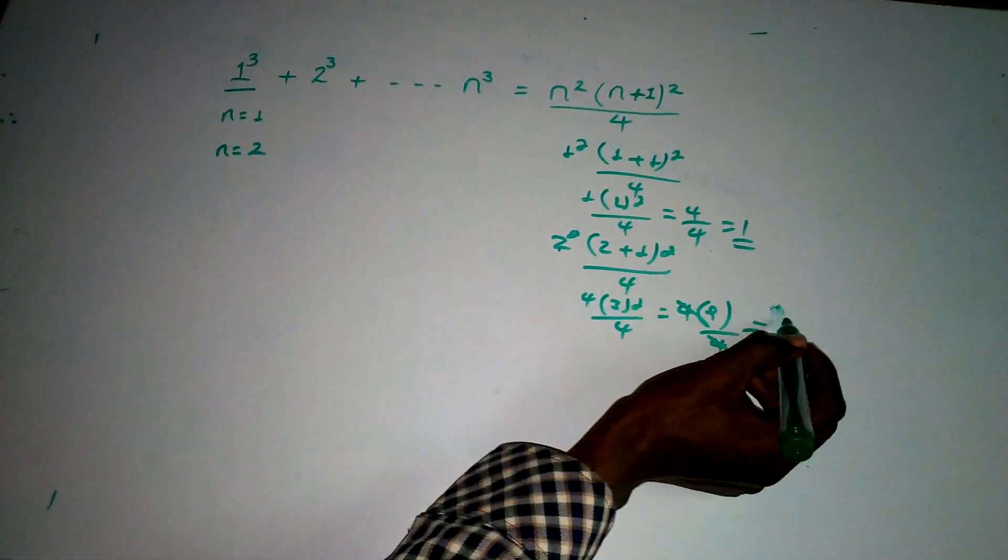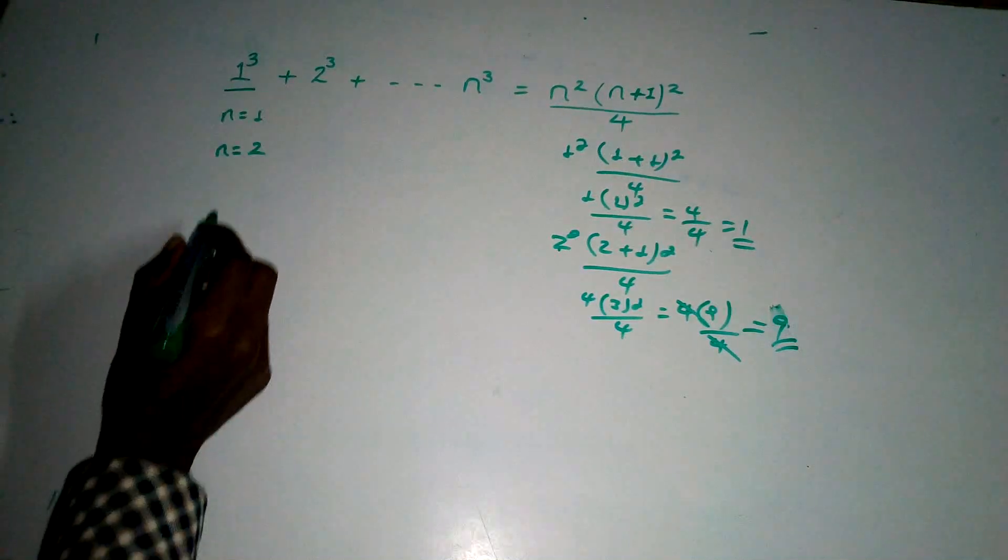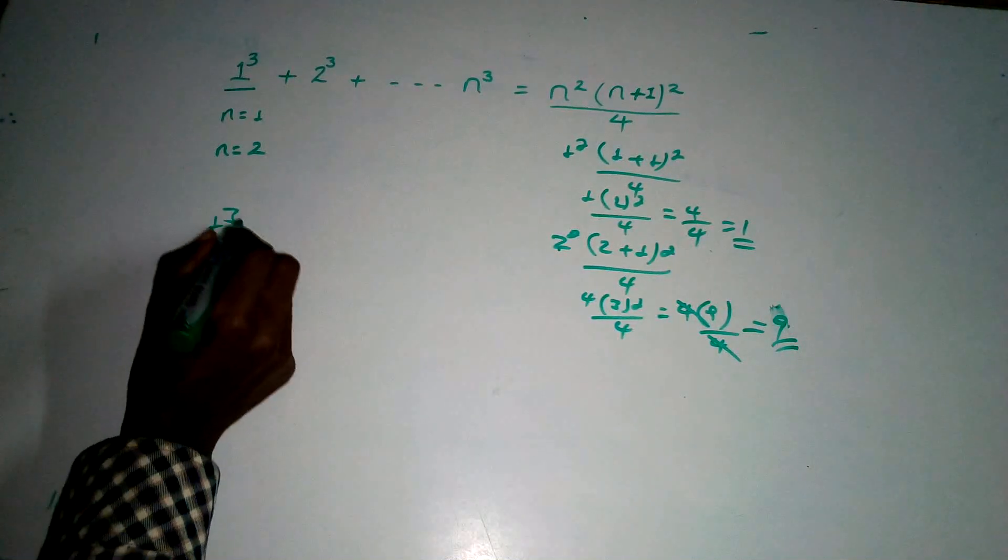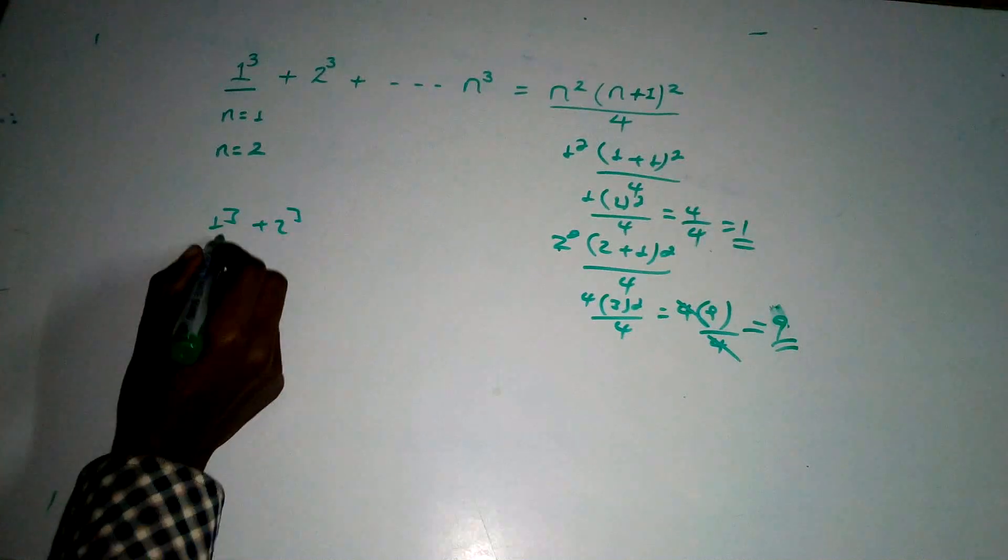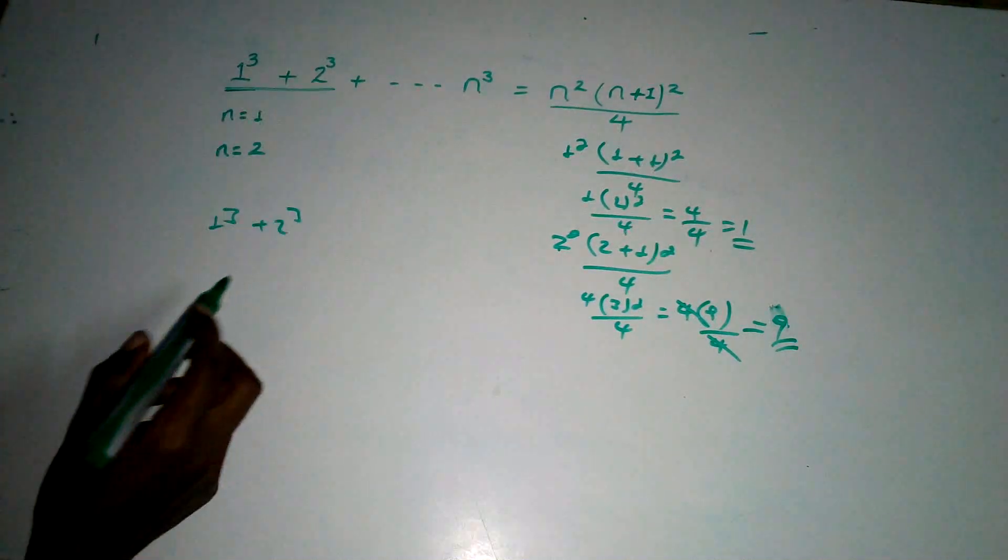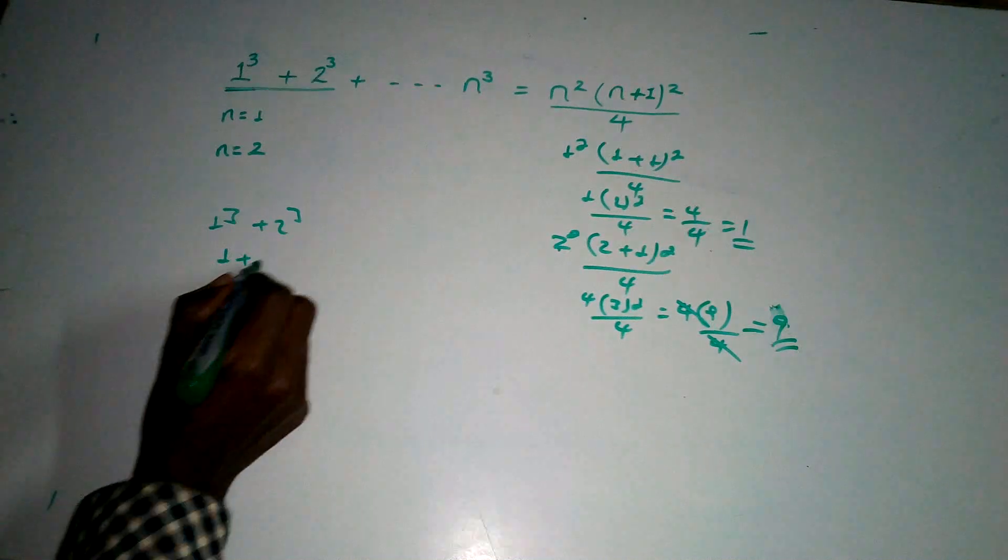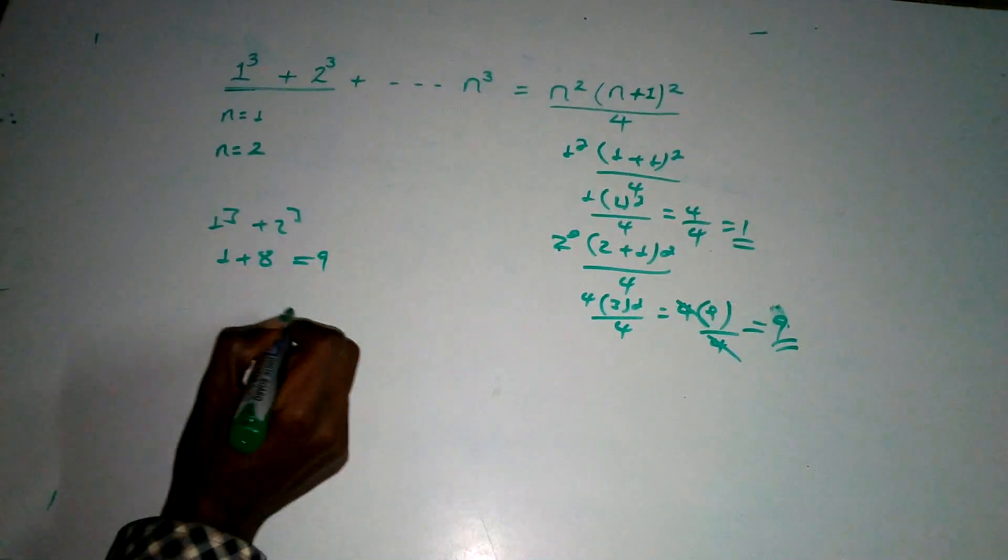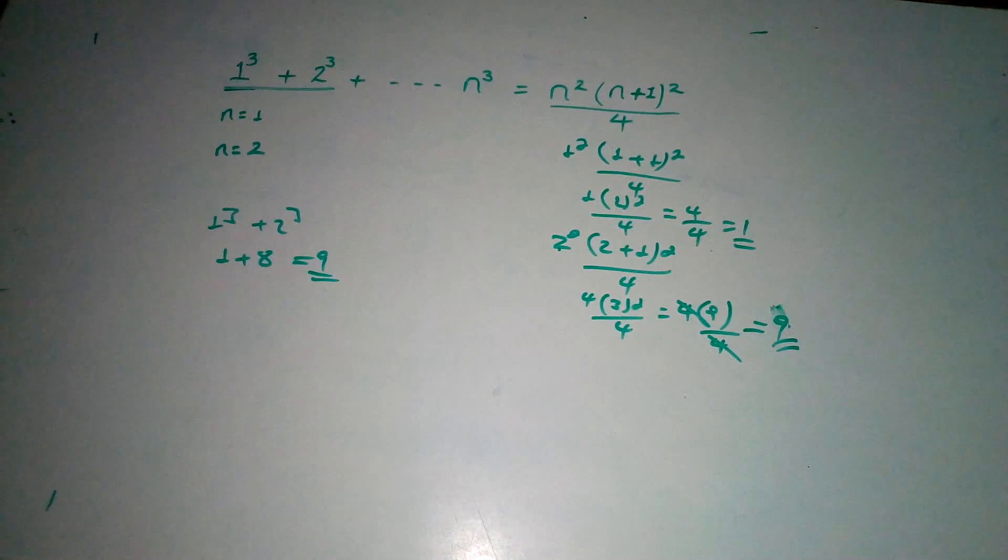We can verify this for any natural number. The first two terms 1 plus 8 equals 9, we're getting natural numbers. Now let's assume it's true for n is equal to k.